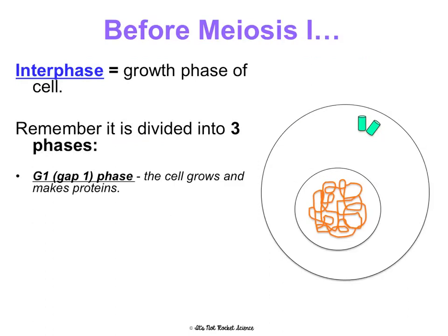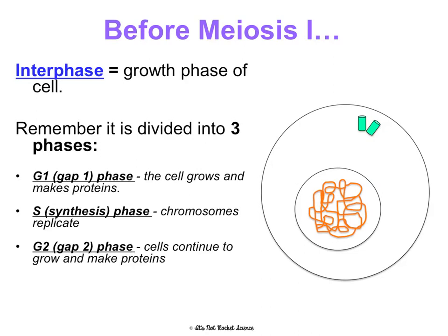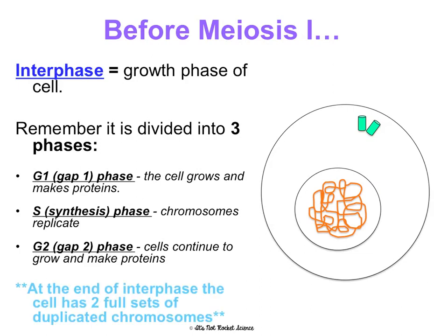Before meiosis I, we're going to do interphase, just like mitosis. Interphase has three parts: G1, which is when the cell grows and makes proteins; the S phase, which is when chromosomes replicate — this is DNA replication, we're going to make the sister chromatids so they look like X's after this part, and we'll have two copies of every chromosome; and G2, when the cell grows and makes more proteins. At the end of interphase, the cell has two full sets of duplicated chromosomes — the chromosomes look like X's.